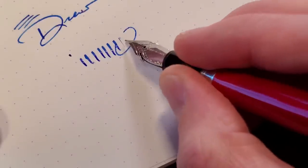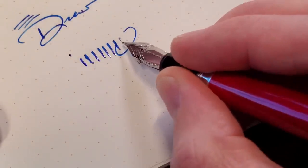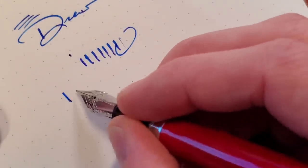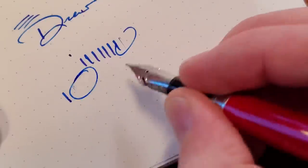So if you kind of go a little nuts, you're going to get something like that, which is called railroading. And that's basically the nib saying, hey, I want to put down a lot of ink, and the feed saying, no, I don't have enough for you, buddy.